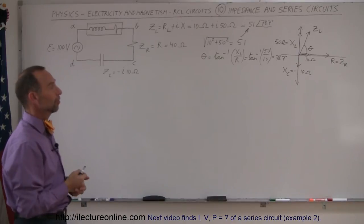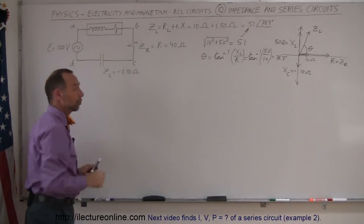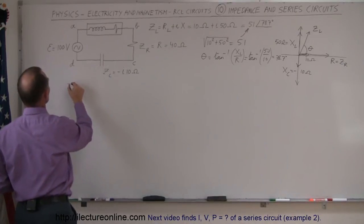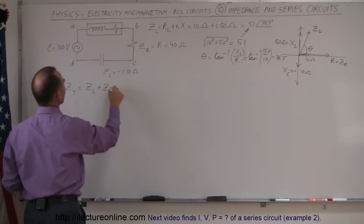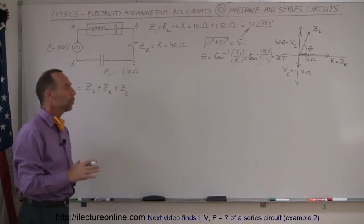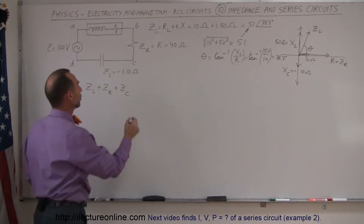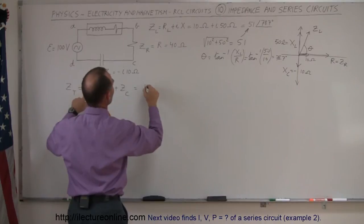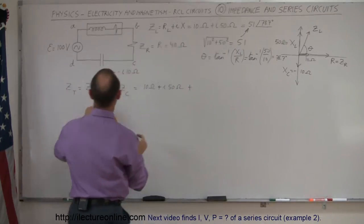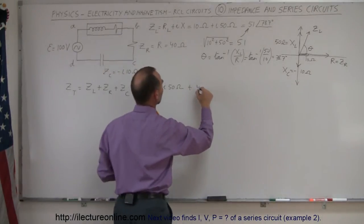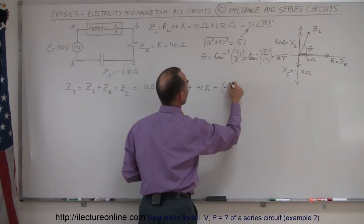Now we want to find the total impedance of the series circuit. Since it's a series circuit, we simply add all the impedances together: Z_total equals Z_L plus Z_R plus Z_C. Since we're adding, we can leave everything in resistance and reactance format. So we write Z_L as (10 + j50) ohms, plus Z_R as 40 ohms, plus Z_C as negative j10 ohms.